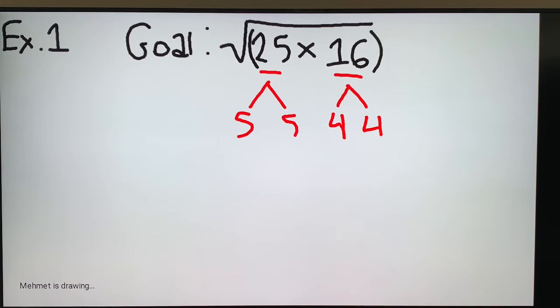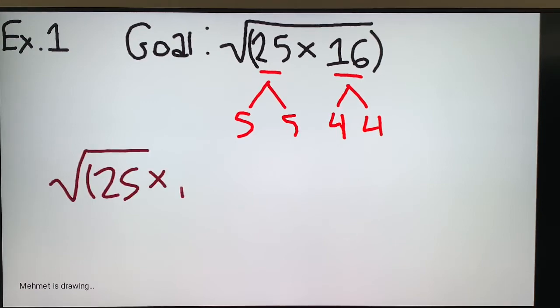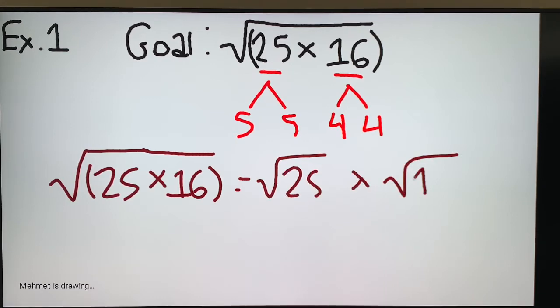So, one property of square roots is that if you have two numbers that are being multiplied in the square root, you are actually able to break it up. So we go from root (25 times 16), we go to root 25 times root 16. So we can break it up, actually. That's a property of square roots, but as long as they're being multiplied.